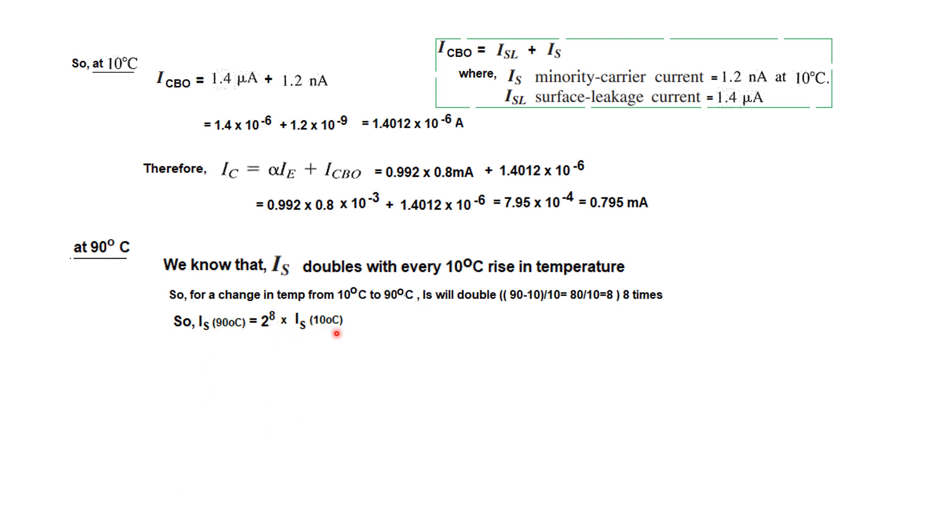So ICBO: the surface leakage is constant, but IS has changed now. We incorporated this value for IS. So in this case now ICBO is 1.7072 × 10^-6 ampere. Now we are ready to calculate the collector current IC. Same formula, plugging in the values. The new IC at 90° is 0.7953 milliampere.